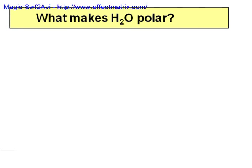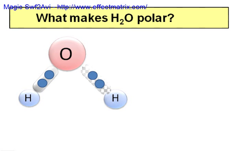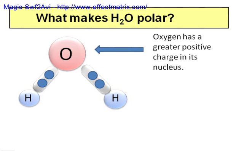So what makes water polar? The diagram depicts a water molecule, which is made up of one oxygen and two hydrogen atoms. Oxygen has a greater positive charge in the nucleus, meaning it has a greater number of protons — in this case eight — compared to hydrogen, which only has one.